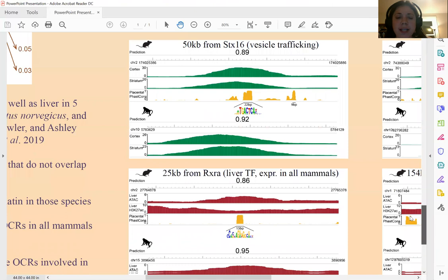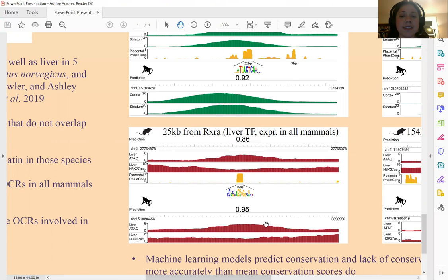One of these examples is this open chromatin region in mouse liver whose ortholog is open in macaque, and our model predicted its openness correctly. Although this region in general has very low conservation, there's a small region within it that is highly conserved, and that region has the motif for CTCF.